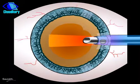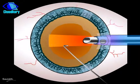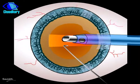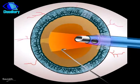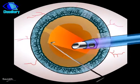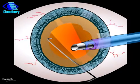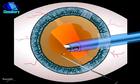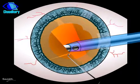With phaco energy, the cataract is dissolved and sucked out of the eye. First the cataract is broken into two halves, and then each half is broken into small pieces, dissolved and sucked out.